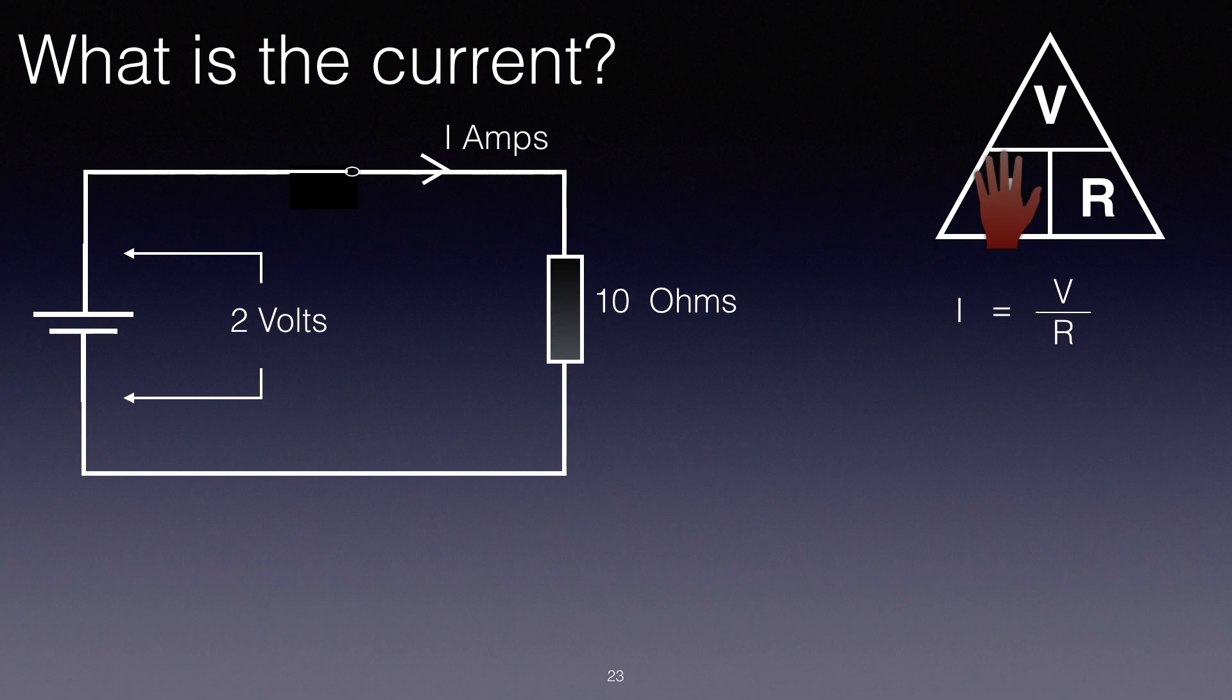I can fill in the values for V over R. It's two volts over ten ohms. I've put that into my calculator, I'll do it in my head, and I've got I equals 0.2 amps. So what we're saying here is in a simple circuit with two volts and ten ohms, the current will be 0.2 amps.